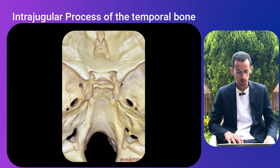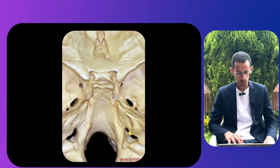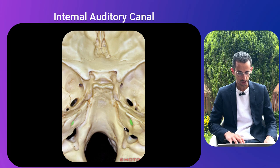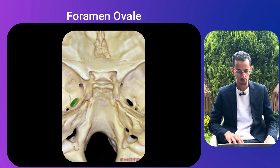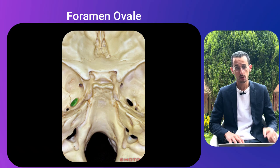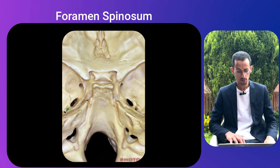Between the petrosal and sigmoid parts of the jugular foramen is the intrajugular process of the temporal bone, highlighted in yellow. The internal auditory canal, highlighted in green, is located just superior to the jugular foramen. In the middle fossa, the foramen rotundum is anterior, and foramen ovale is behind it — through these foramina the second and third divisions of the trigeminal nerve exit into the pterygopalatine and infratemporal fossae respectively. The middle meningeal artery passes through the foramen spinosum, which is posterolateral to the foramen ovale.